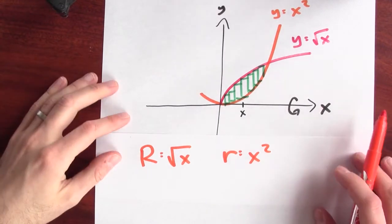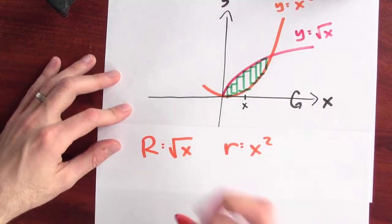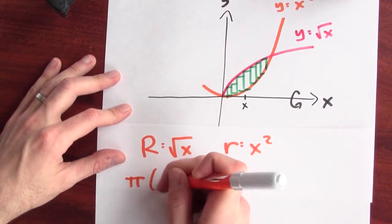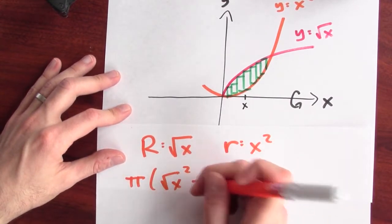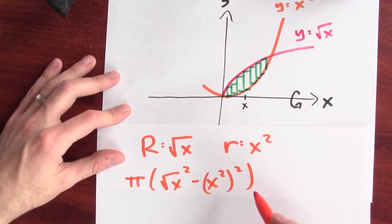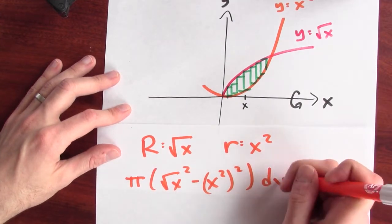Okay, now I just got to use the formula for the volume of that washer. And the formula for the volume of the washer there is π times big R squared minus little r squared times the thickness of the washer, which is dx.